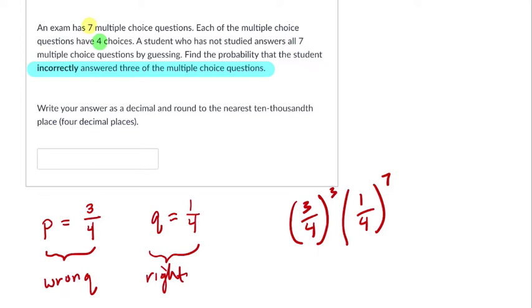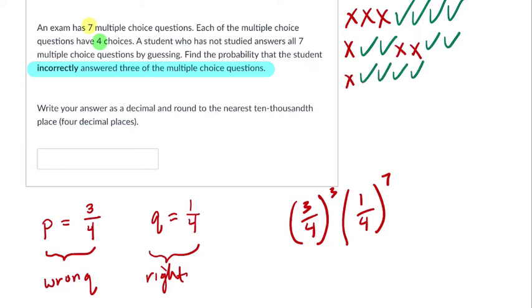But that's just one arrangement of results that we can get. If you think about what's going on here, we have seven questions. This is saying I got the first three wrong, and then the next four right. But I can get three wrong in essentially many different ways. So for example, we don't know the distribution of right and wrong answers. And each of them are equally likely.